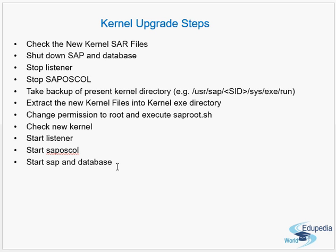After the upgrade, run disp+work -v to confirm the new kernel version is active. You can also verify from within SAP by going to transaction SM51 and checking the Release information there. Keep in mind that a kernel upgrade always requires downtime — there is no way to perform it while the system is up and running.